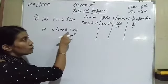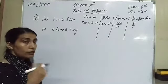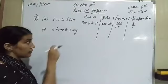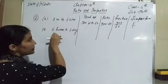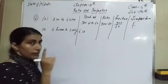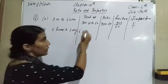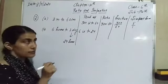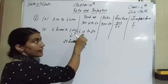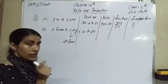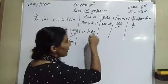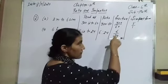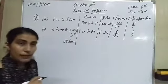In the second part: 6 hours to 1 day. First we convert 1 day into hours — in 1 day there are 24 hours. So we read it as 6 is to 24. In ratio form: 6 ratio 24. In fraction form: 6 by 24. In simplest form, 6 fours are 24, so that becomes 1 by 4. That is its simplest form.